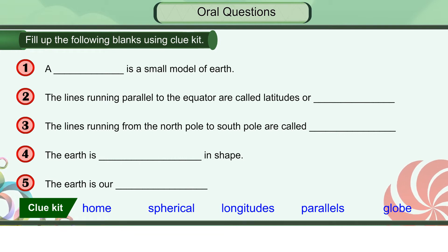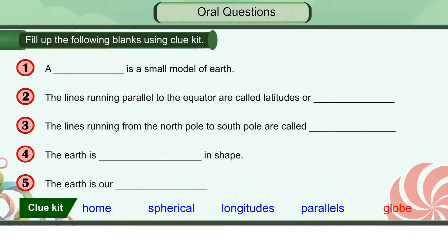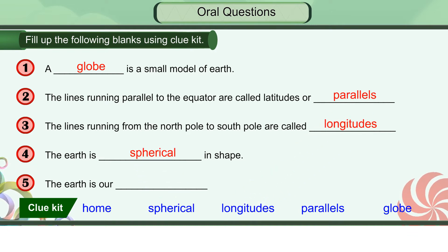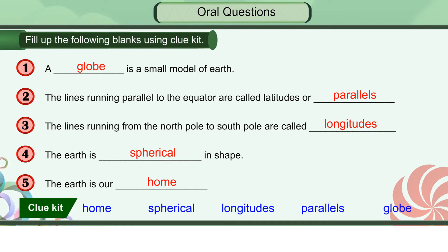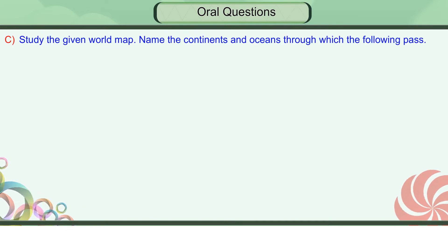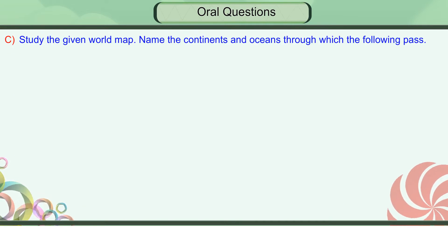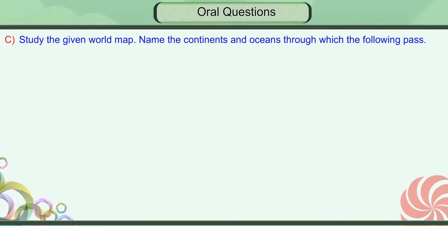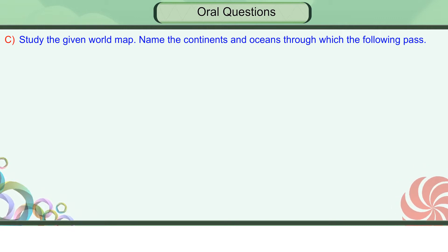Study the given world map. Name the continents and oceans through which the following pass — mapping skills: Equator, Tropic of Capricorn, Tropic of Cancer, Prime Meridian. Match the following.